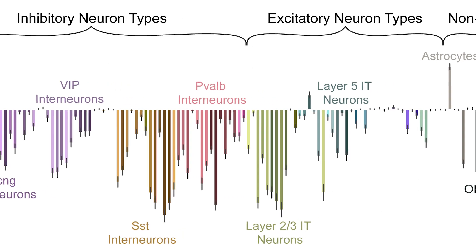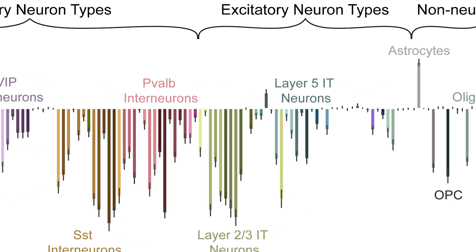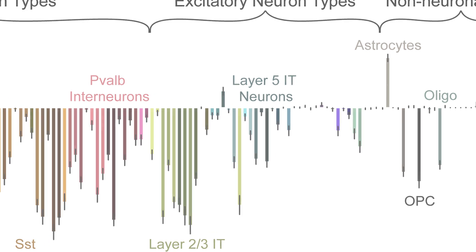That means that we can not only identify this is a cell type that we care about, but we also have a way in. We have a molecular handle on getting access to those cells and maybe understanding a bit more about how they function.